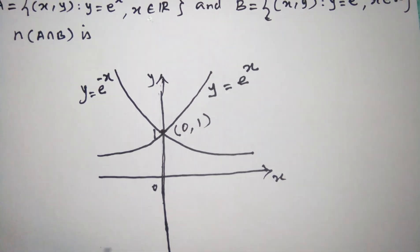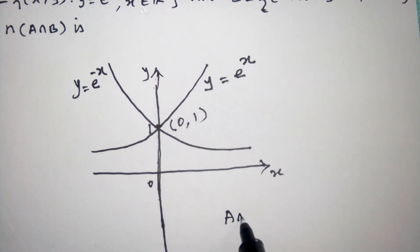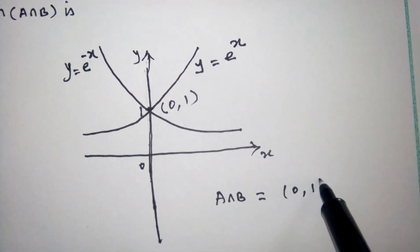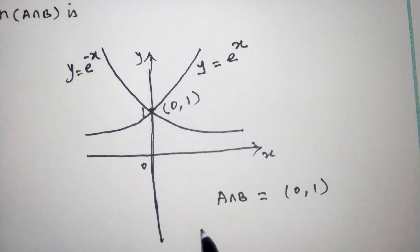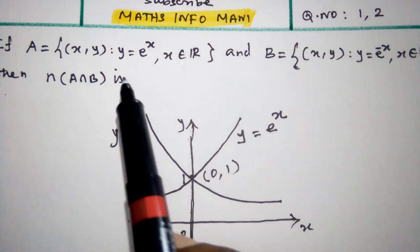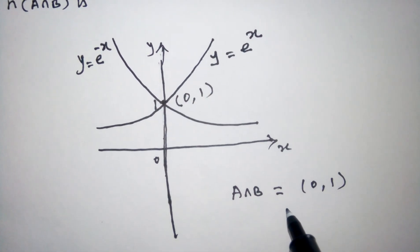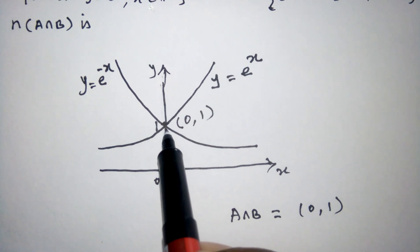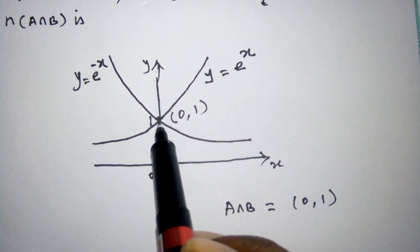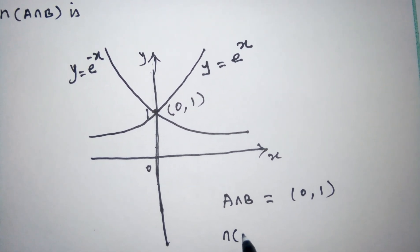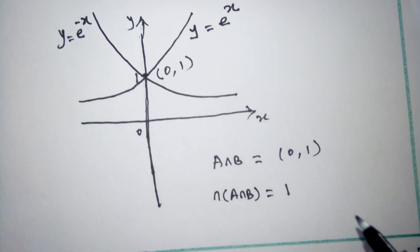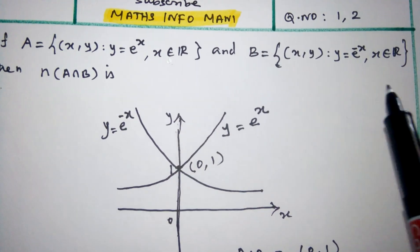So, A intersection B is equal to {(0, 1)}. Now the answer is: n(A intersection B) is — these two curves intersect at only one point. So, n(A intersection B) is equal to 1. This is the answer for this question.